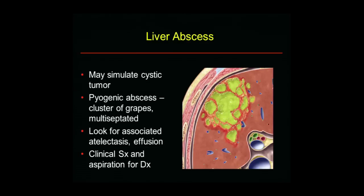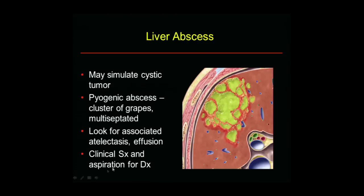Liver abscesses — you might say that's not an incidental finding, but I've seen many patients where the referring physician was not thinking abscess when they ordered the CT. It may simulate a cystic tumor. Pyogenic abscesses have a cluster-of-grapes or multiseptated, often non-encapsulated appearance. These often occur in the right lobe, in a subdiaphragmatic location, and as a result there will often be a pleural effusion, diaphragmatic stenting, and basilar atelectasis. I use that to support an infectious rather than neoplastic etiology. Check symptoms and we will sometimes aspirate these for diagnosis.